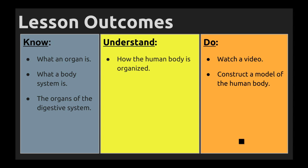Between yesterday and today, we talked about what an organ is and what a body system is — that's when we manipulated the poster in Lesson 1. Today we'll move on to Lesson 2 and talk about the organs of the digestive system, or the digestive tract. This helps us understand how the human body is organized into systems.